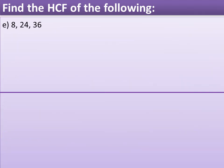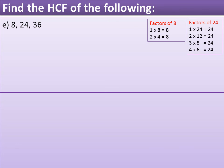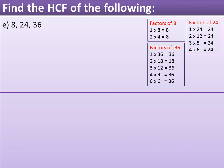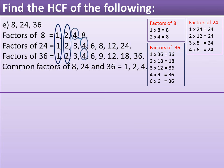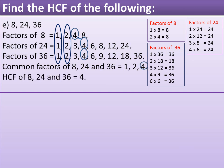Question E: Find the HCF of 8, 24, and 36. Factors of 8 are 1, 2, 4, and 8. Factors of 24 are 1, 2, 3, 4, 6, 8, 12, and 24. Factors of 36 are 1, 2, 3, 4, 6, 9, 12, 18, and 36. Common factors of 8, 24, and 36 are 1, 2, and 4. So the highest common factor of 8, 24, and 36 is equal to 4.